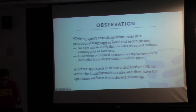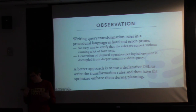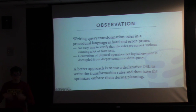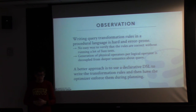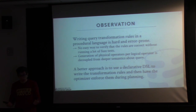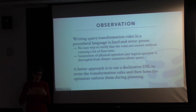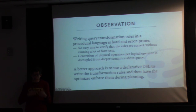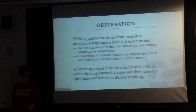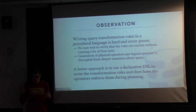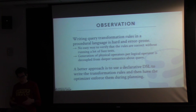The better approach is to use a declarative domain-specific language (DSL) that allows database implementers to write transformation rules in a high-level declarative manner, and then have the optimizer act as a compiler to generate the code enforcing those rules during query optimization. This is why in the Volcano paper you read, they talk about the system as a framework or toolkit for people to write optimizers — it allows you to write these rules out declaratively.